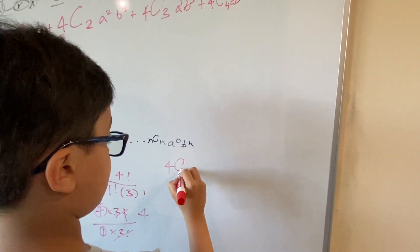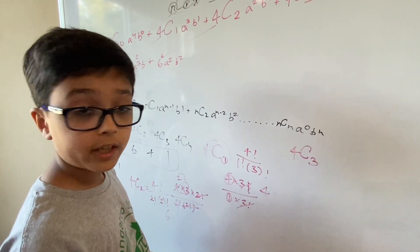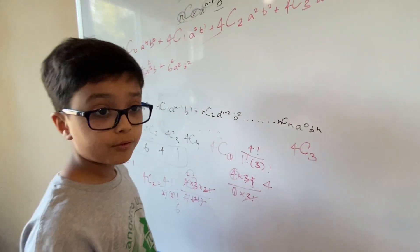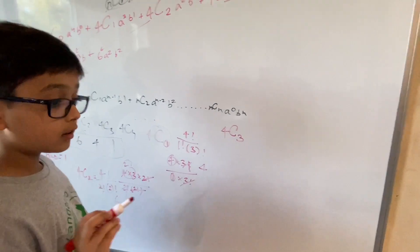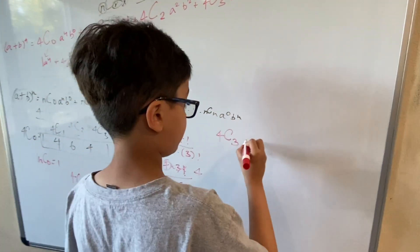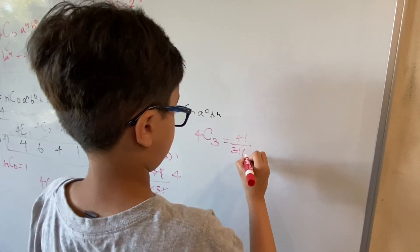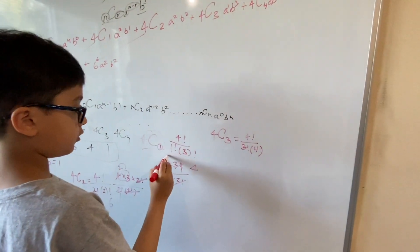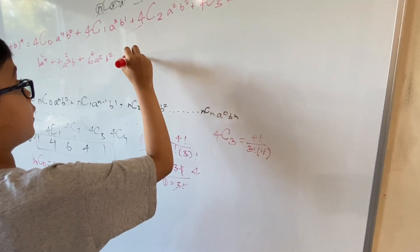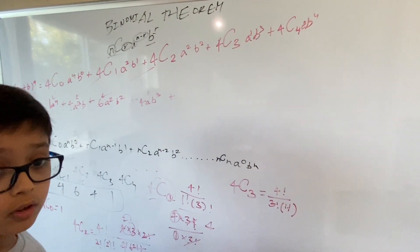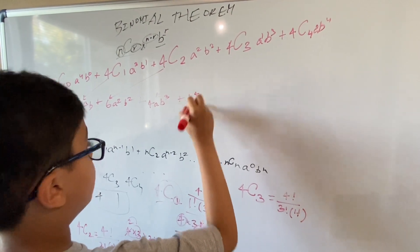Moving on to 4C3. For 4C1, I forgot to say: you don't need to do the full method, because if you use logic — if there are four objects a, b, c, d — there are only four ways you can pick one. Same with 4C4: there's only one way you can pick all four. It will be different in permutation, but that's how combination works. So 4C3 = 4 factorial over 3 factorial times 1 factorial. That gives us the fourth term: 4ab³. Plus the last term: b^4.